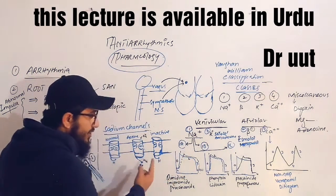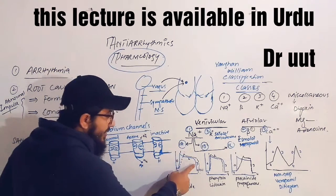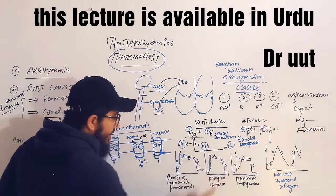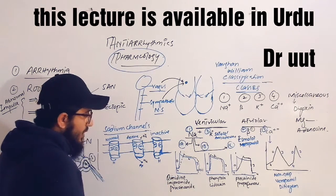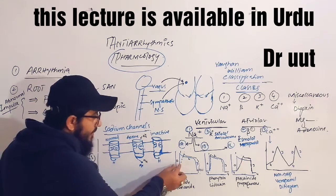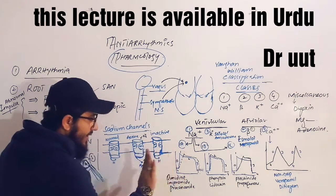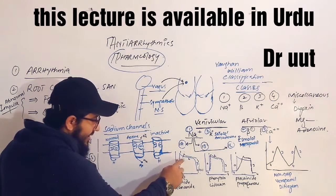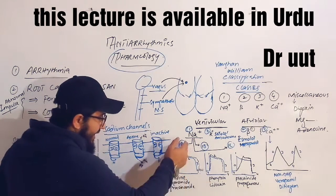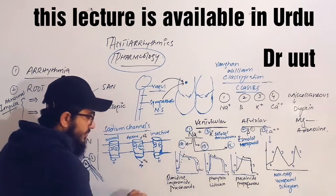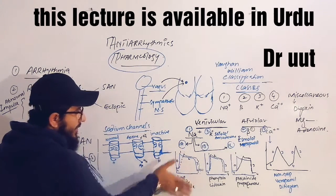Quinidine, disopyramide, and procainamide block both active and inactive sodium channel gates, producing a delay in depolarization. They also delay phase 2 and phase 3 because they act on potassium channels in phase 3. So Class 1A drugs prolong both the depolarization phase and the repolarization phase.